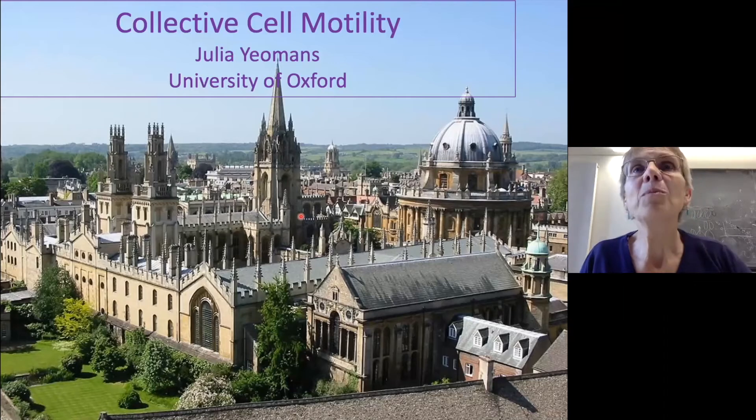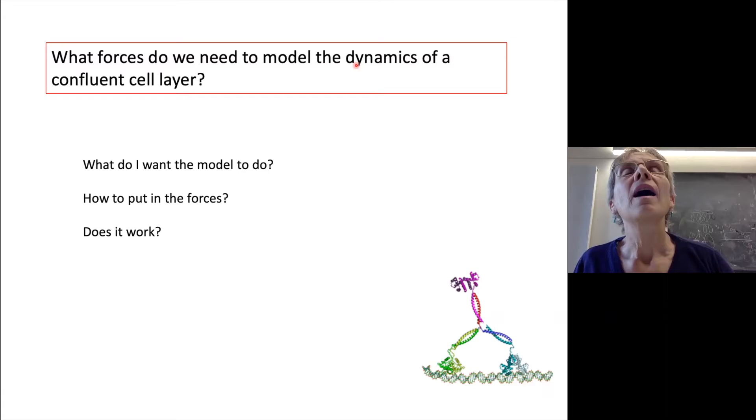Okay, well, good morning, everybody. This is the question I want to ask today. I want to look at just a very simple confluent layer of cells plated on a Petri dish and ask, what forces do you need to construct a very simple model of this cell layer?